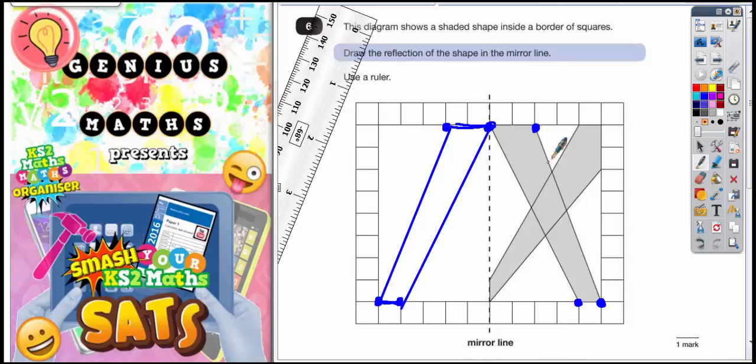Now we'll do the two lines which are going this way. So we need this corner and this corner. Well this corner has got a two square gap to this blue corner here. So on the opposite side there's going to be a two square gap from this corner. So two squares is going to take it to there.